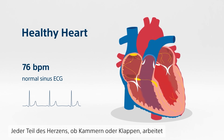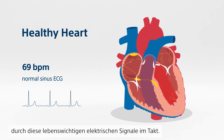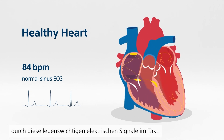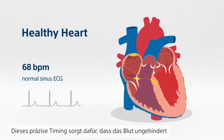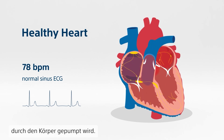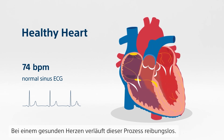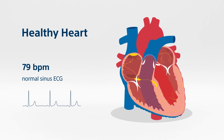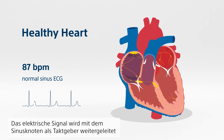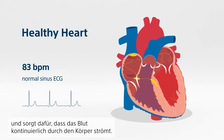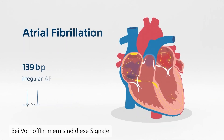Each part of the heart — from the chambers to the valves — works in unison, driven by those vital electrical signals. It's this precise timing that keeps the blood circulating smoothly throughout the body. In a healthy heart, this process is seamless: the electrical signals travel smoothly, guided by the sinus node, ensuring that blood flows steadily through the body.